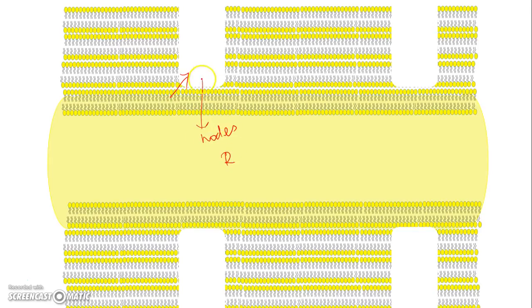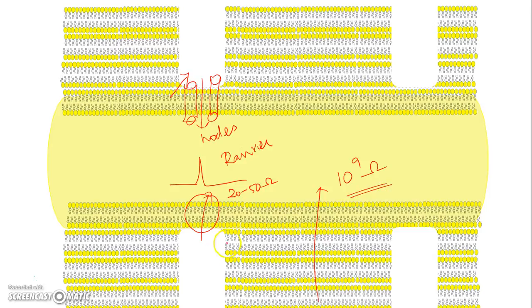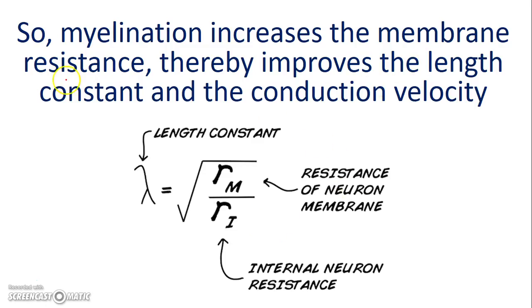There are sites in the axonal membrane where there is no myelination, called the nodes of Ranvier. These are sites where the membrane resistance is very low because there is no myelination, and there is also a high concentration of voltage-gated ion channels at the nodes of Ranvier, which further drops the membrane resistance. So the action potential is initiated at the nodes of Ranvier. At these nodes the membrane resistance is around 20 to 50 ohms, whereas in the myelinated segment it is around 10 to the power of 9 ohms. In summary, myelination increases the membrane resistance, thereby improves the length constant, and hence the conduction velocity is increased.